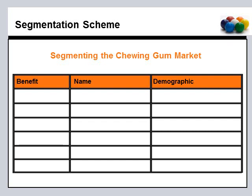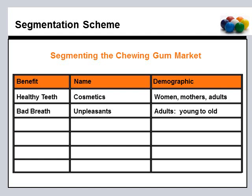Here's a brief example of a segmentation scheme that I came up with myself, following the format of the analysis we did in class. The matrix has three columns: benefit, name, and demographic. The first segment has the healthy teeth benefit, which I named 'cosmetics,' with a demographic of women, mothers, or adults. The second segment is the bad breath — or good breath — benefit. I named that group 'the unpleasants,' with a demographic of adults, young to old.